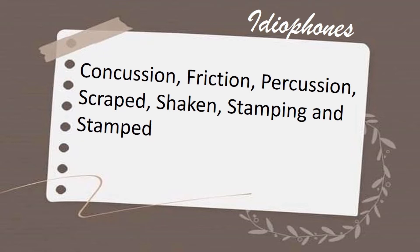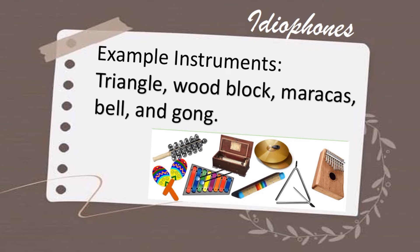Friction is when you produce sound by rubbing the instrument. Percussion refers to idiophone instruments that produce sound by striking or using a striker — like xylophones, triangles, and so on. The other playing methods are self-explanatory: the instrument is shaken, scraped, or stamped.